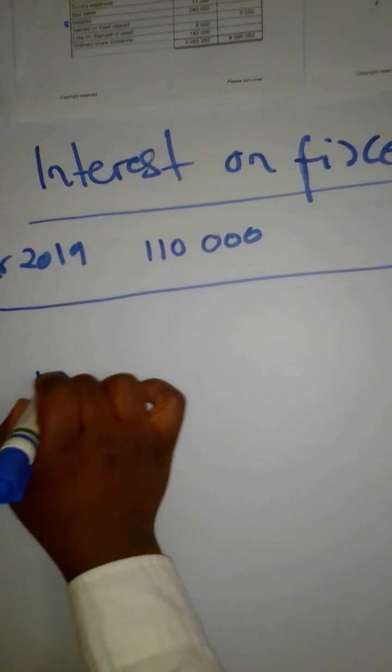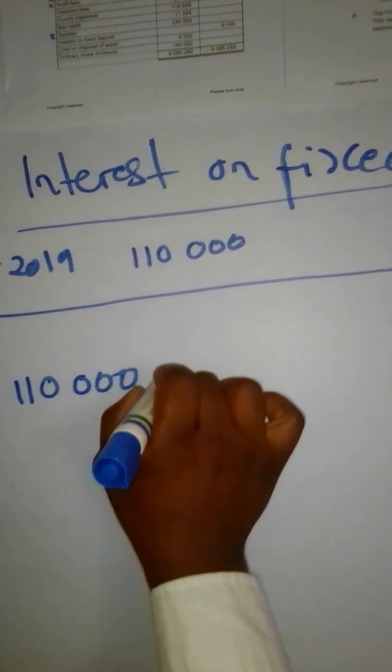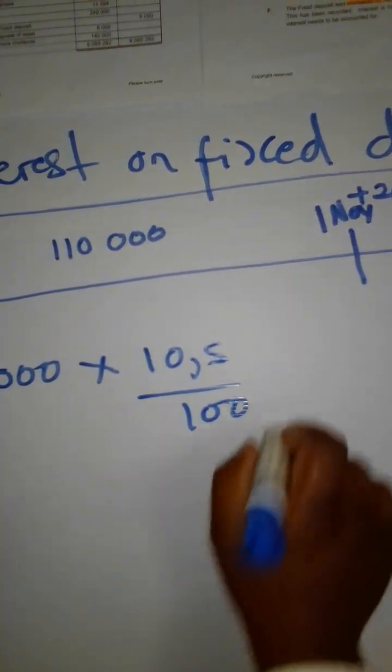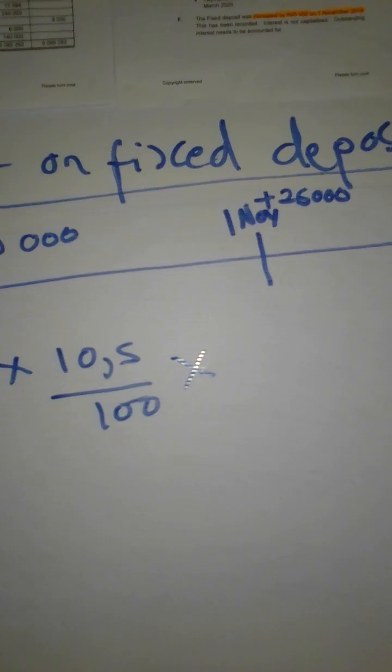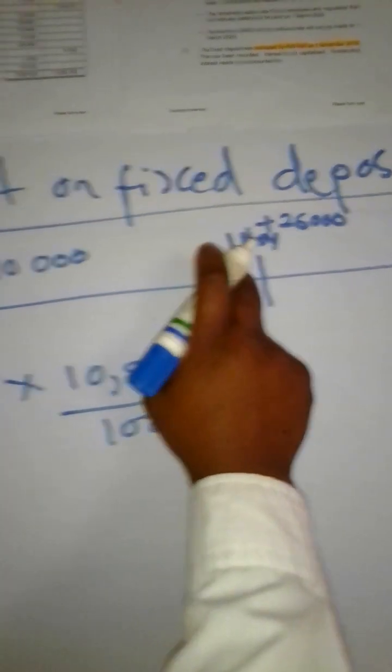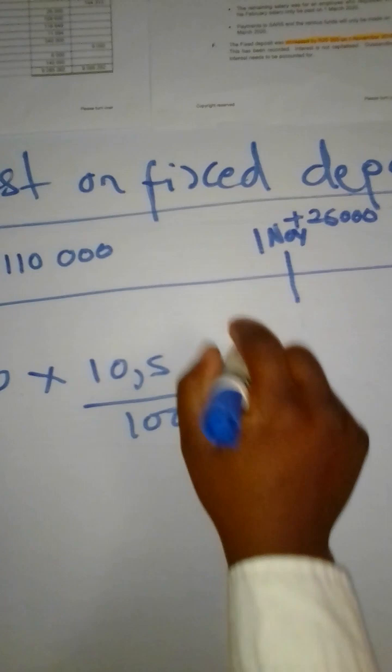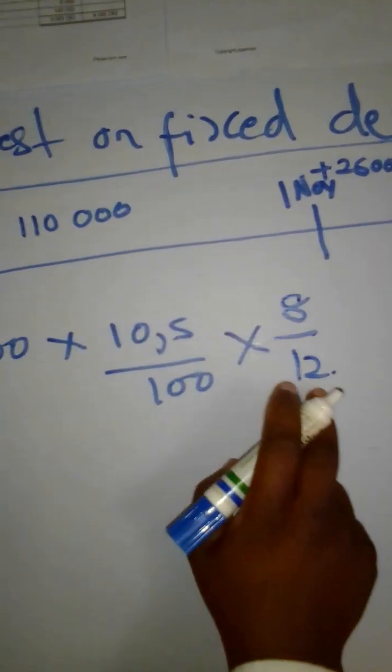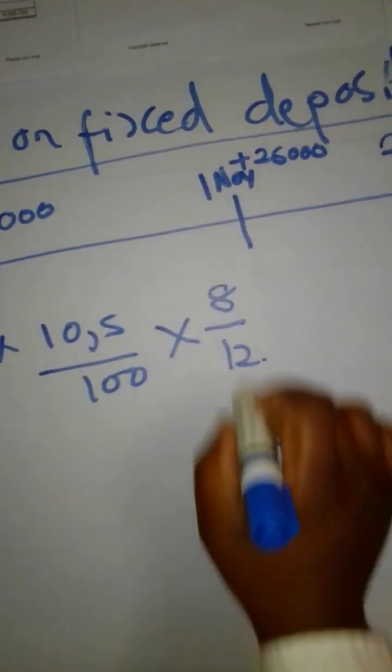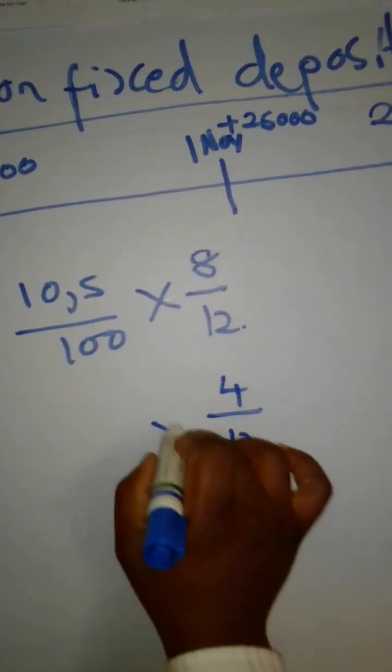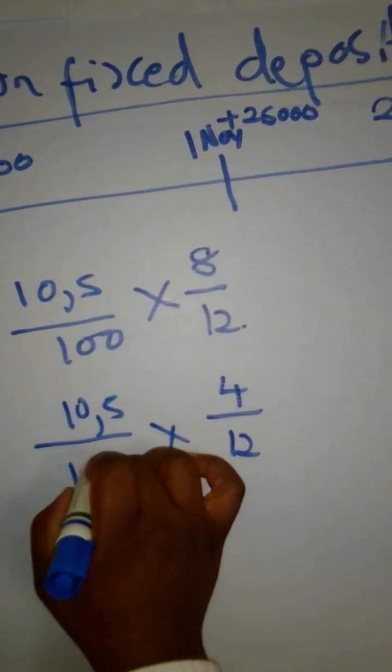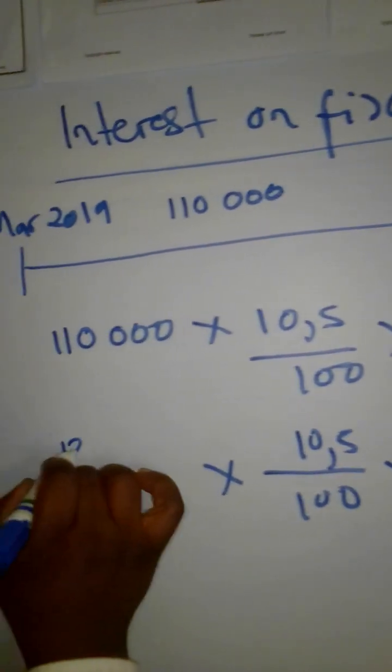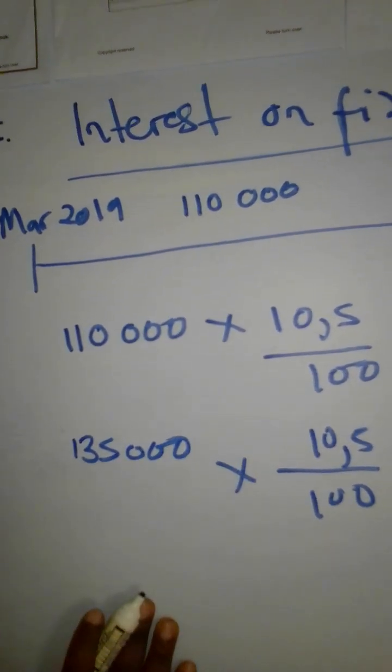So we are going to start by saying the fixed deposit $110,000 multiplied by the interest 10.5%, and then we also will apply by the number of months that are there from 1 March up to this 1 November. So we are going to go up to 30 October. They are 8 months, so times 8 months over 12.